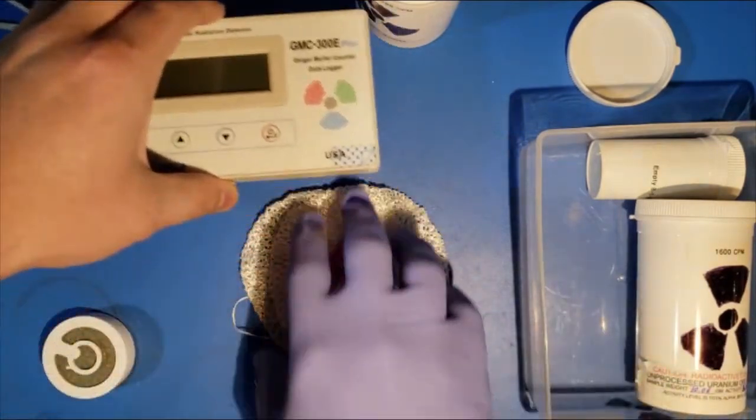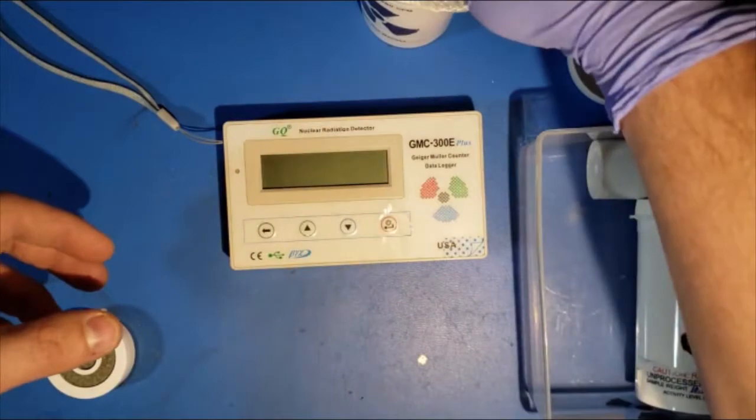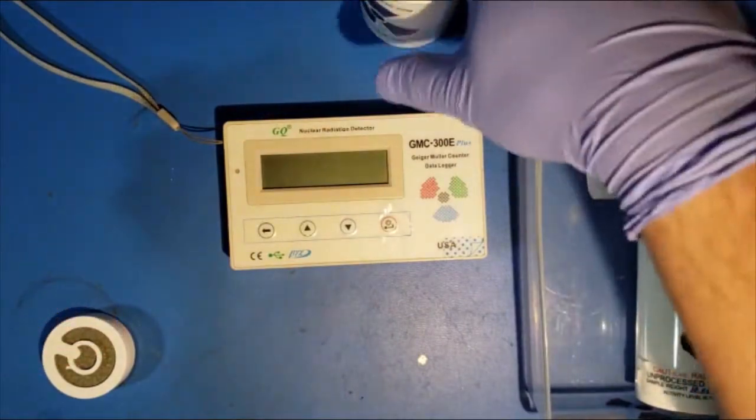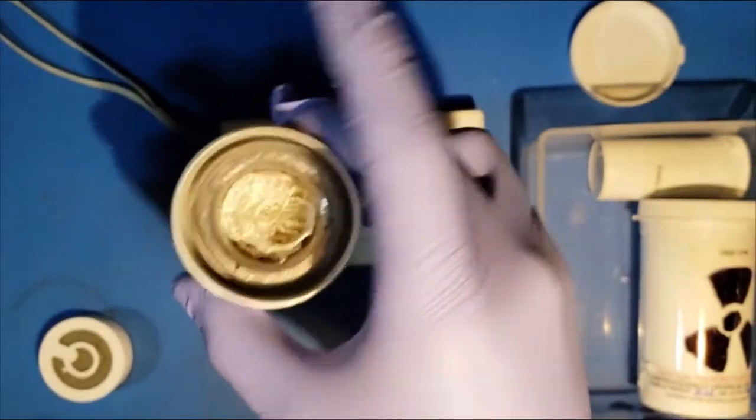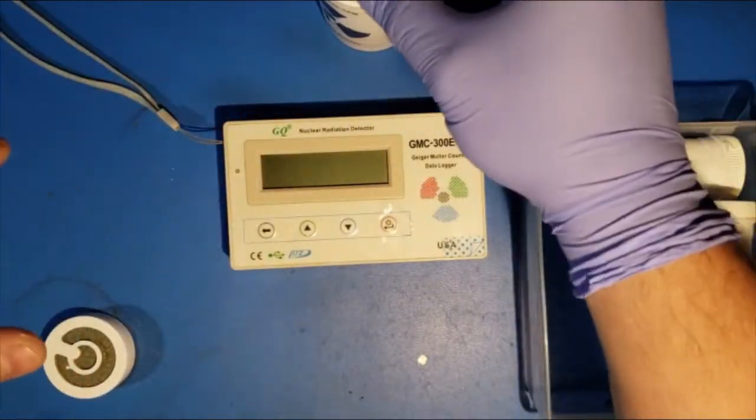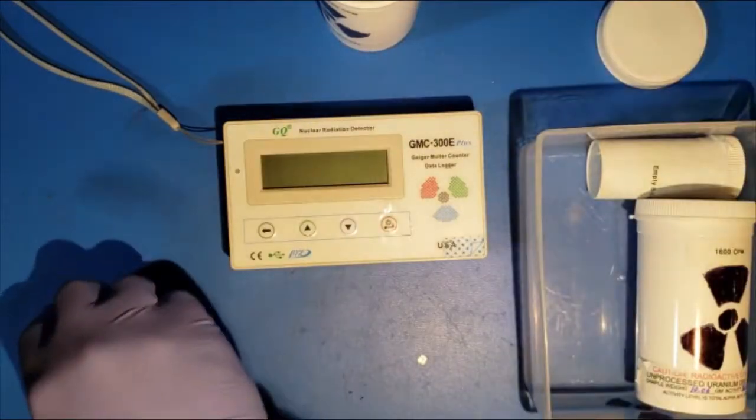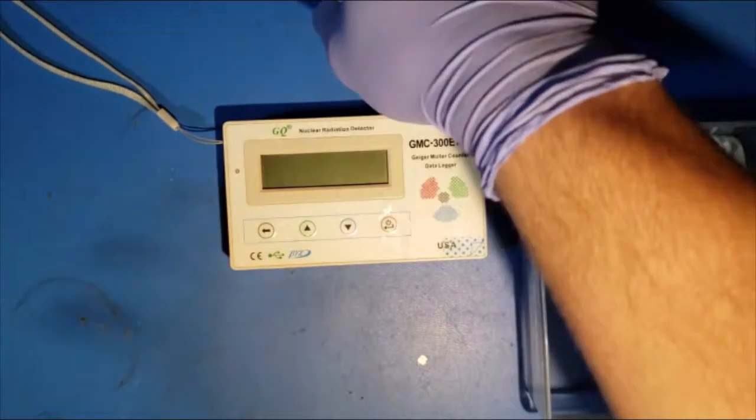Now, in addition to the thorium lamp mantles, which I will put away now, I'll have to make sure I wash my hands after this, just to be safe, because these do emit quite a bit more than the alpha sources, and if you get stuff like that on your hands for extended periods of time, you can get small burns. Not like cancer causing or anything, but you'll get a beta radiation burn.